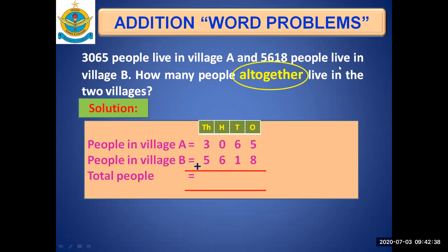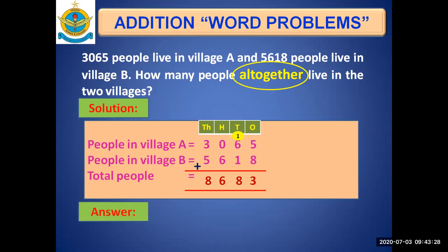Starting from ones: five plus eight is thirteen — write three in the ones column and carry one to tens. Add tens: six plus one is seven, plus the carry one is eight — write eight. Add hundreds: zero plus six is six; then three plus five is eight — write eight. So far we have the answer, but we must also write the answer statement.